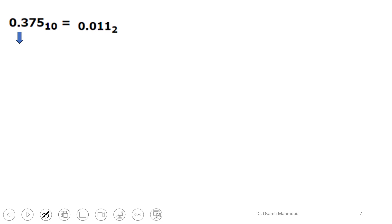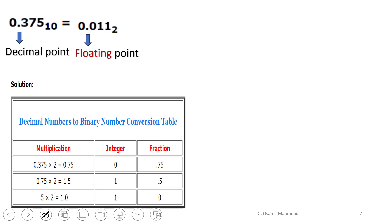Now, if you have a decimal fraction, it works the same way in binary — but the point in binary is called a floating point, not a decimal point. To convert, take your fraction, multiply it by 2, write down the integer part, take the remaining fraction, and multiply again by 2. Continue taking the integer each time. Once you reach 0 in the fraction part, you stop. Then you read from top to bottom, writing left to right.